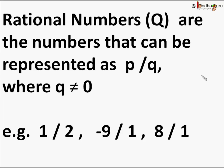How do we know whether a number is a rational number or not? A number r is called a rational number if it can be written in the form p/q, where p and q are integers and q is not equal to 0. For example, 1/2 is a rational number where p is equal to 1 and q is equal to 2.